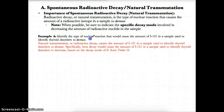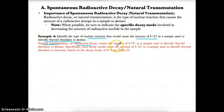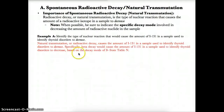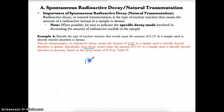Example A: Identify the type of nuclear reaction that would cause the amount of I-131 in a sample used to identify thyroid disorders to decrease. Natural transmutation or spontaneous radioactive decay would cause the amount of I-131 to decrease. Specifically, if you look at Table N for I-131, you'll see that beta decay (B-minus) is listed in the decay mode column.